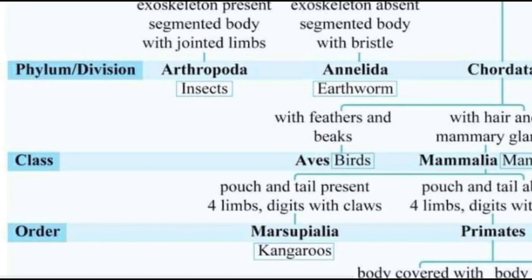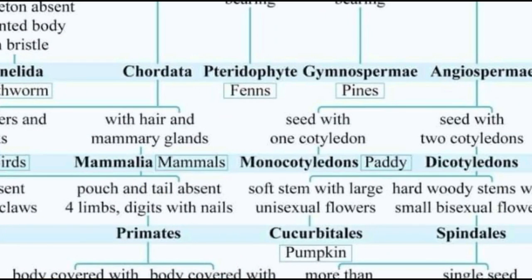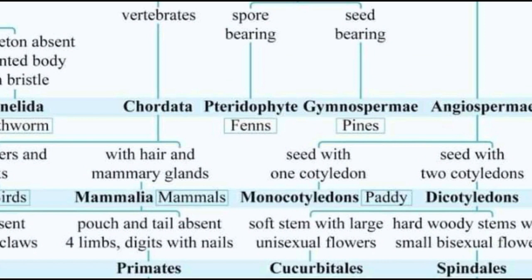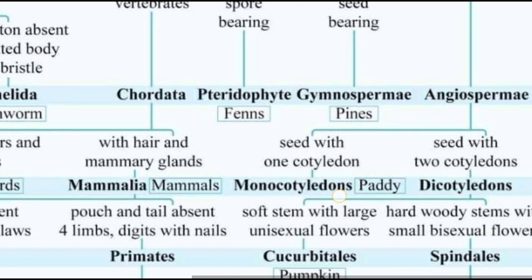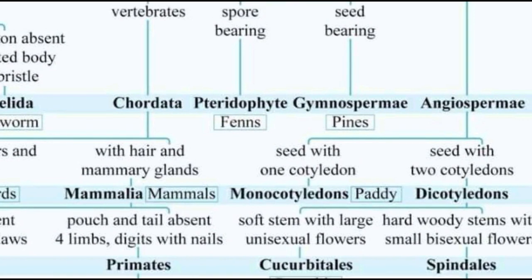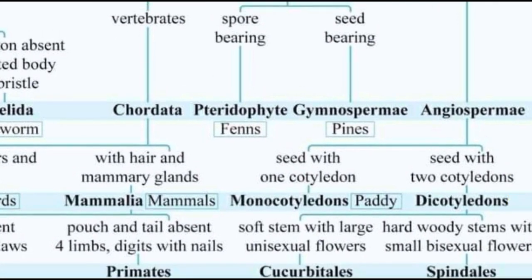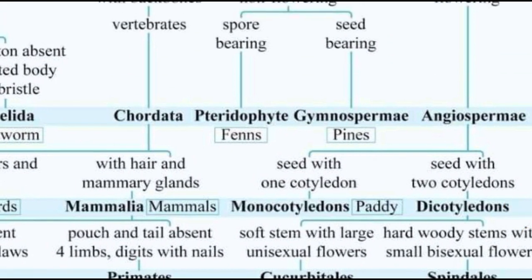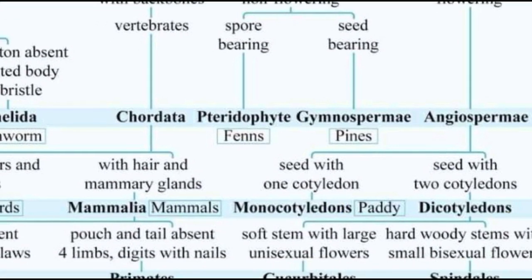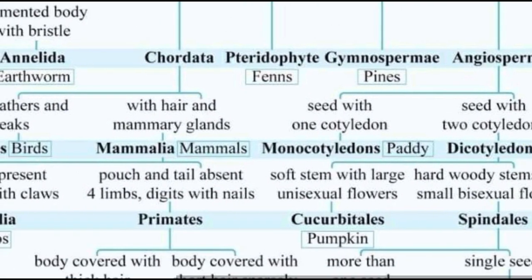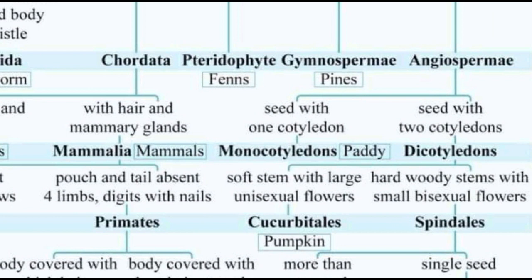You're going to have the class. Seed with one cotyledon — the cotyledon is a good one. See with two cotyledons — cotyledons is called dicotyledons. If you use CUSO, it is called monocotyledons. Dicotyledons is called dicotyledons.